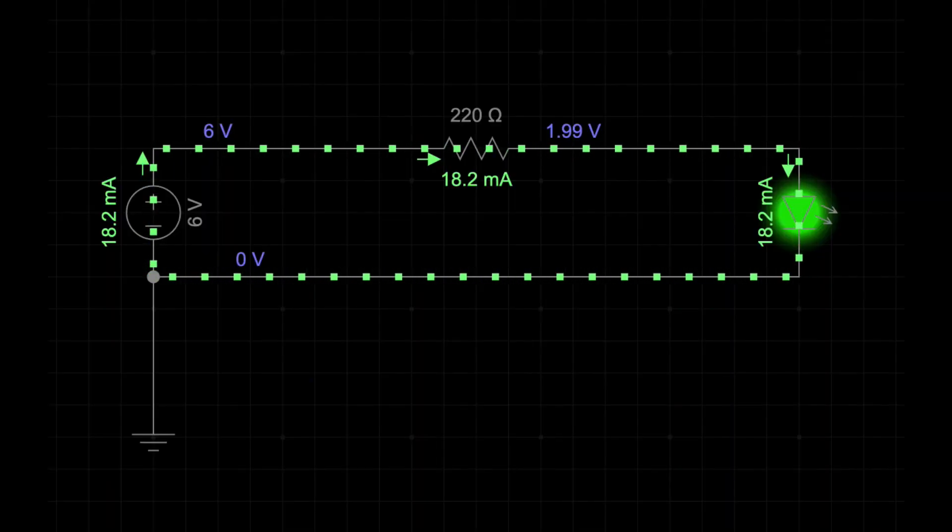First off, what is voltage? In simple terms, voltage is the driving force behind the flow of electricity. It pushes electrons through a conductor, like a wire, allowing them to do useful work for us, such as lighting up a bulb or powering a motor.